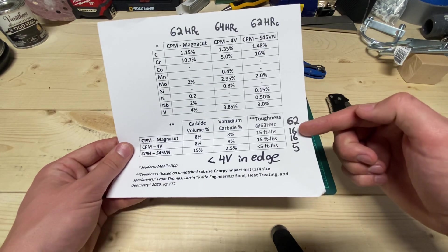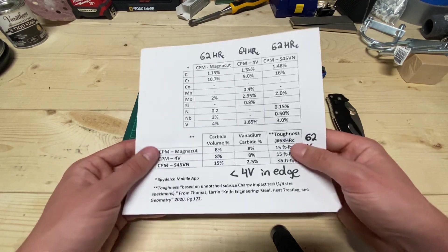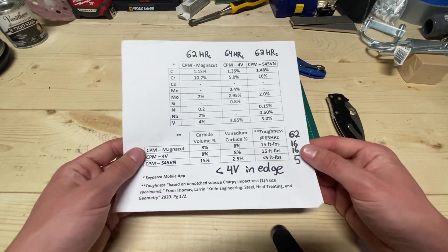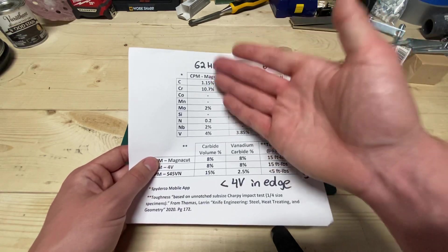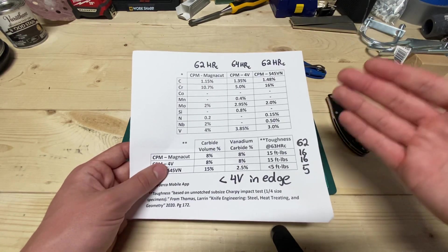And you're getting 15 foot pounds of toughness. Well, actually, I've got it over here for 62. It's like 16-ish. Like, heck yeah, that's freaking awesome. And that's the last advantage it's got. It's just, it's the whole package. It's everything.